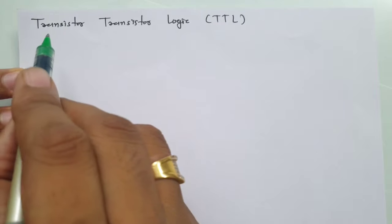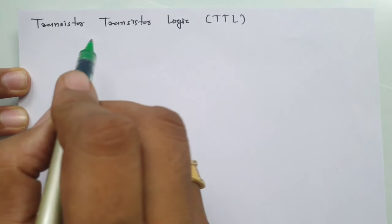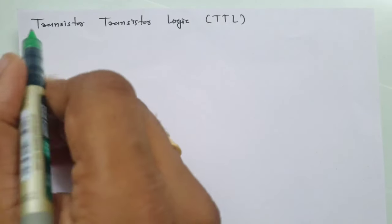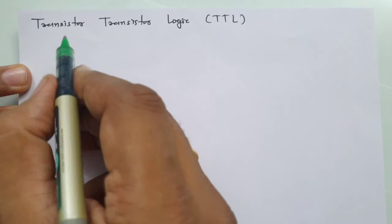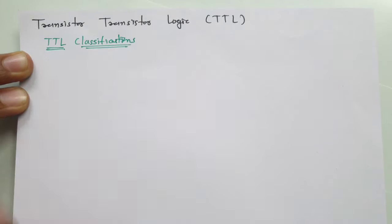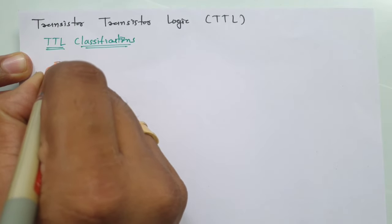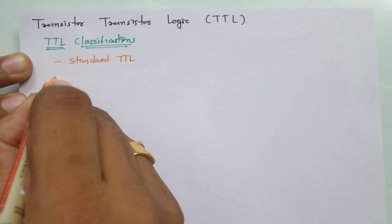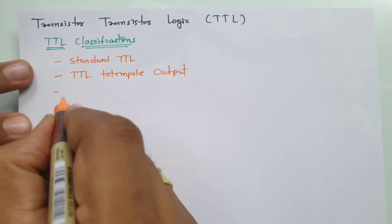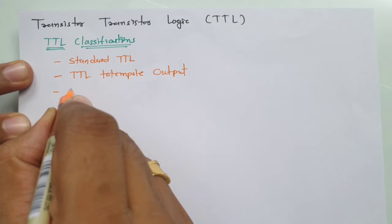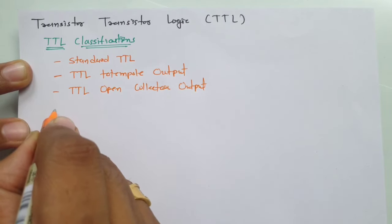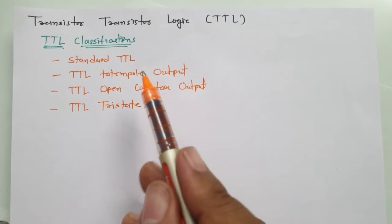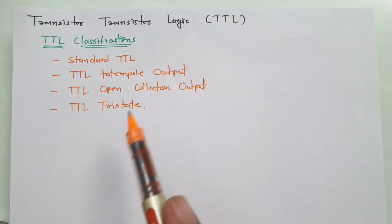Before we go into a detailed explanation, one should know the basic classifications of the TTL family. The TTL family is classified into four different domains: first is standard TTL, second is TTL totem pole output, third is TTL open collector output, and fourth is TTL tri-state logic. These are the four different categories of the TTL logic family.